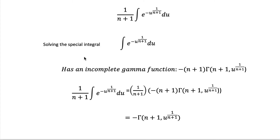This integral is a familiar form. Solving this special integral gives the incomplete gamma function: minus (n+1) times gamma(n+1, u^(1/(n+1))). Including the factor 1 over (n+1) in front, the (n+1) terms cancel, leaving minus gamma(n+1, u^(1/(n+1))) as the result.